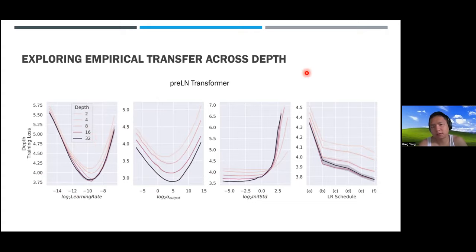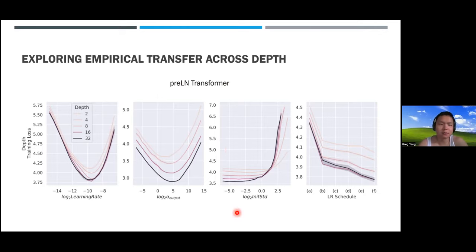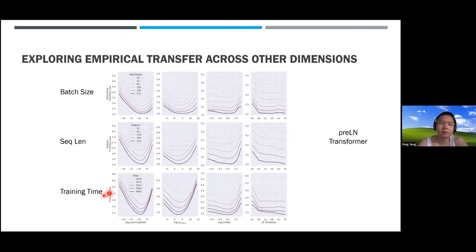Empirically, over a reasonable range of depth the hyperparameters are reasonably stable and can be used in practice for pre-layer-norm transformers. However, this doesn't work in several situations like post-layer-norm transformers. We also did the same thing for batch size, sequence length, and training time—over reasonable ranges the optimal hyperparameters are reasonably stable. We're not saying this is the best way; just that the naive approach works reasonably in these dimensions.